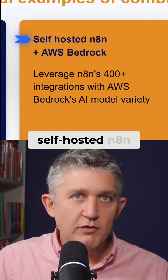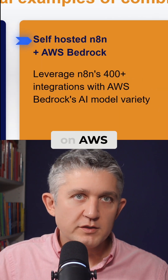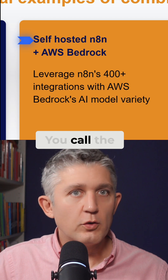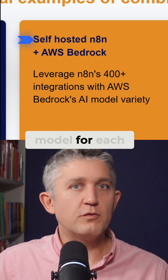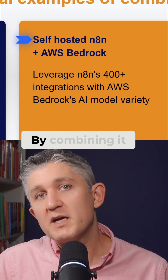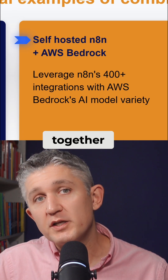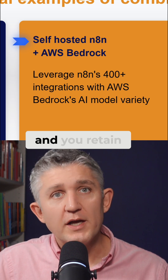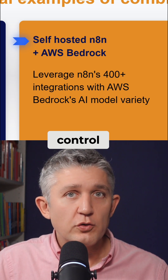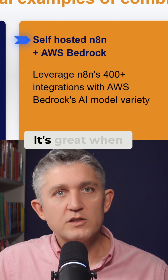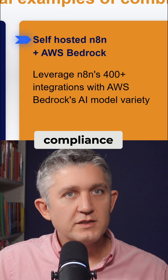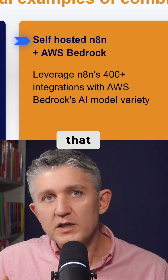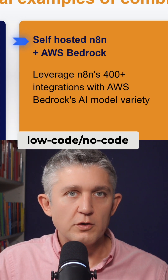Number two: self-hosted N8N on AWS Bedrock. You keep orchestration on your servers and call the best model for each job via Bedrock. By combining them together, you keep latency low, traffic stays private, and you retain control over scale and cost. It's great when compliance and custom logic matter, but you want to retain some of that flexibility over low-code, no-code.